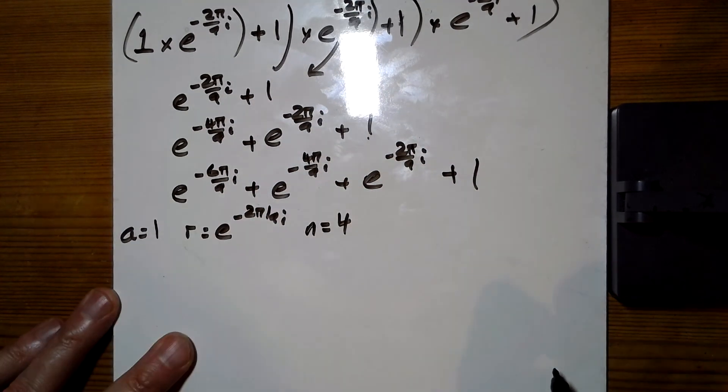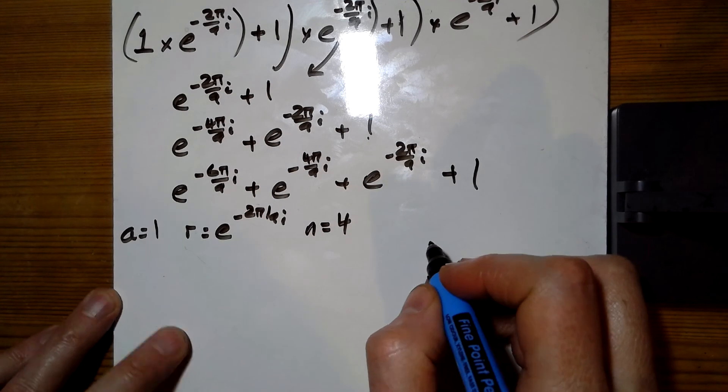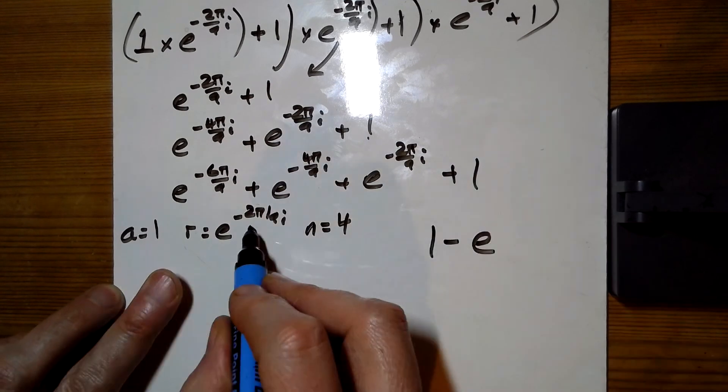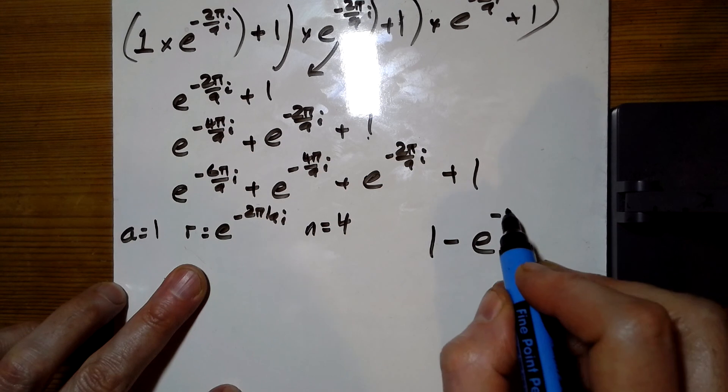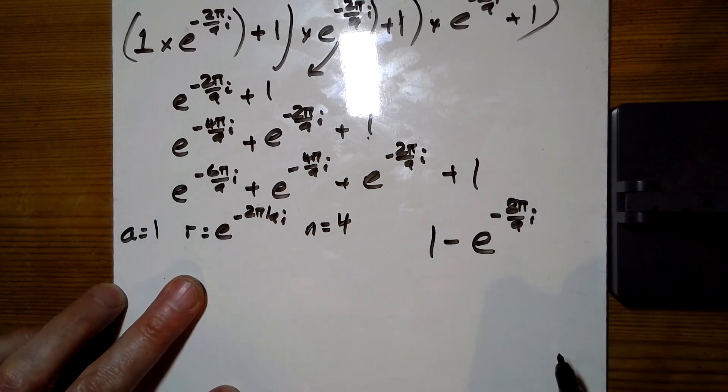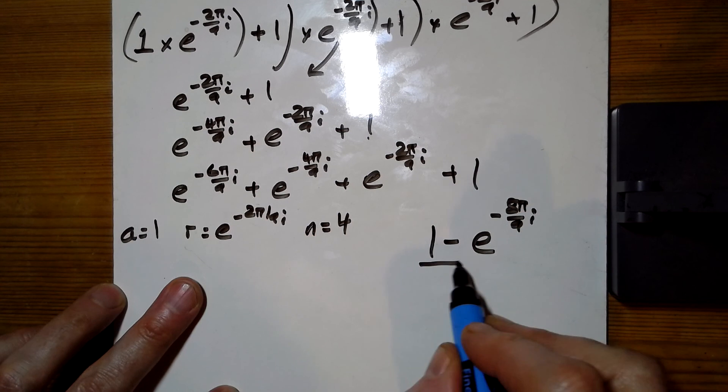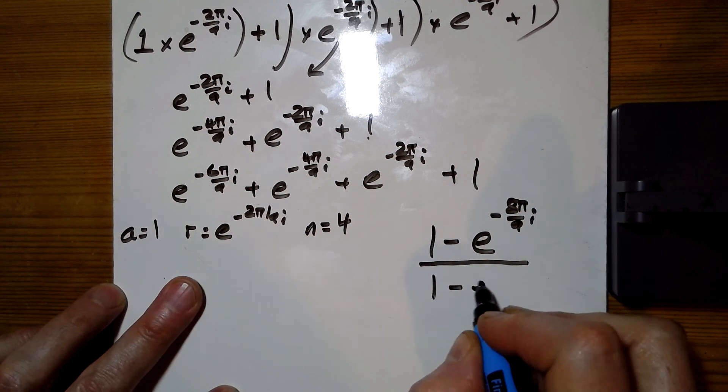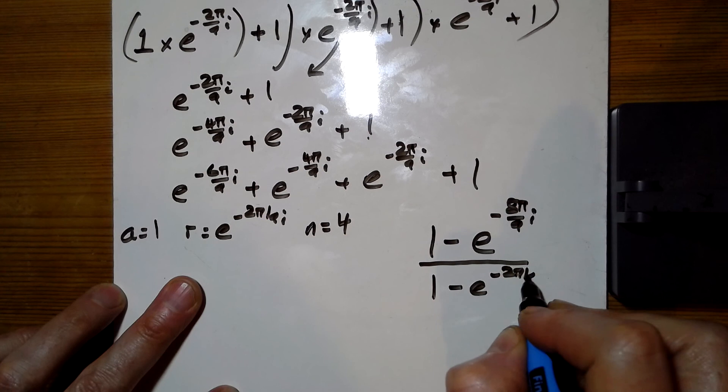So the sum formula for the sum to 4 is 1 minus e to the, this to the power of 4, which is minus 8pi over 9i, all over 1 minus just r, which is e to the minus 2pi over 9i.